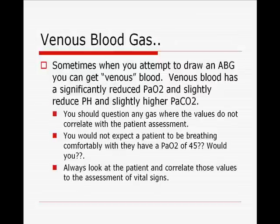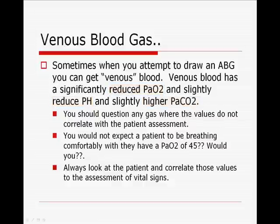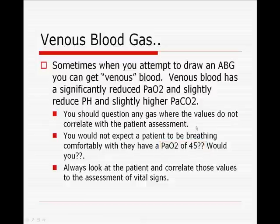Don't forget about the possibility of getting a venous blood gas. The exam may ask whether you can determine that a venous blood gas was drawn instead of an arterial one. You should know that the venous blood gas has a slightly reduced PaO2, a slightly reduced pH, and a slightly higher PaCO2. The venous PaO2 is around 45, venous saturation is 75%, and CO2 is in the higher 40s. Always question any gas where the values do not correlate with the patient's clinical assessment — there's always the possibility that venous blood was drawn instead of arterial.